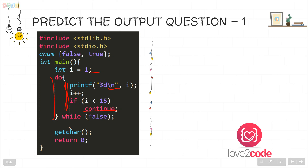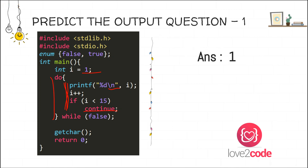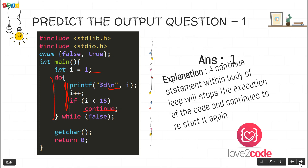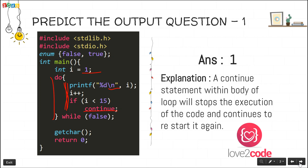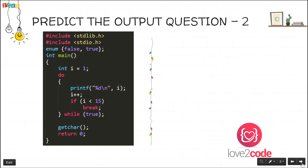Here in the do-while loop the condition is false, so it comes out of the loop. The expected output is 1. The explanation is that a continue statement within the body of a loop stops further execution of that iteration and restarts the loop from the condition check.